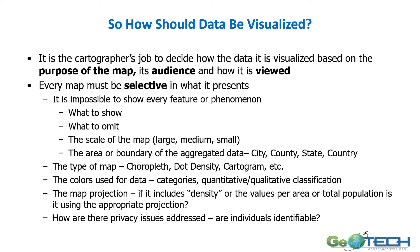So how should data be visualized? It's really the cartographer's job to decide what data will be visualized and how it will be visualized. They look at the purpose of the map, who the audience is, and how it will be viewed — whether it's a paper map, online, or interactive. All maps have to be selective in what they present. It's impossible to show every feature in an area, so the cartographer has to know what to show, what to omit, what scale the map should be, and what area or boundaries are used for the data.